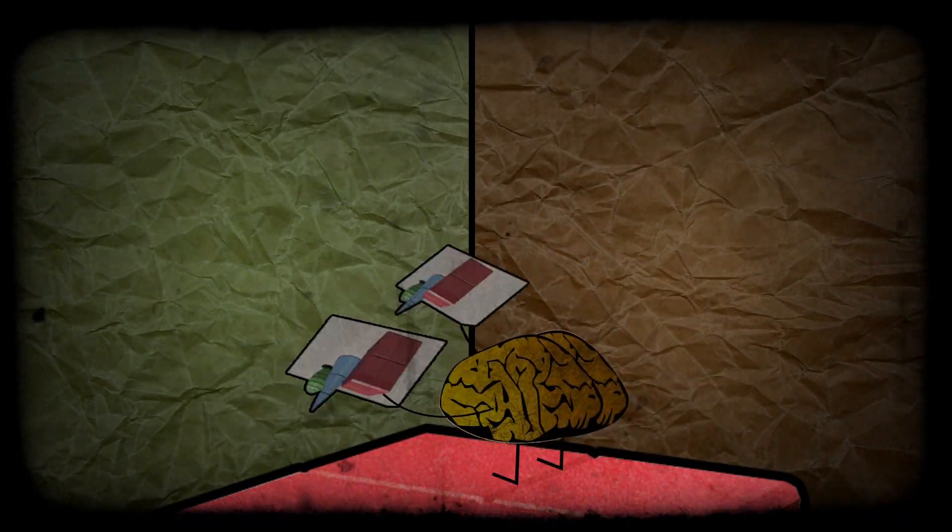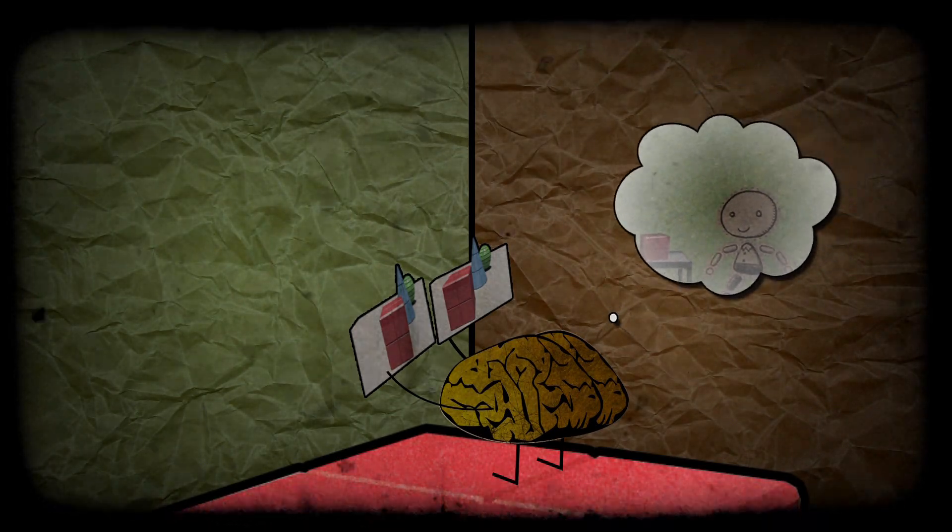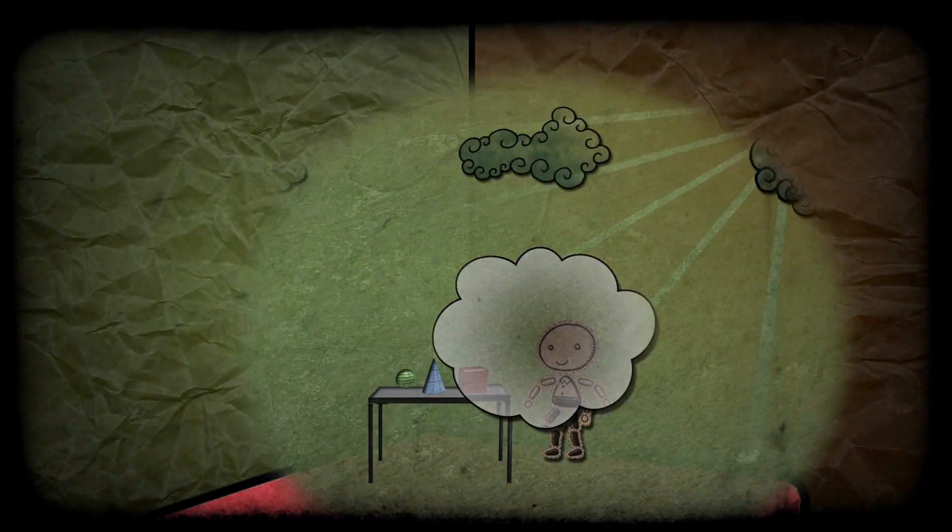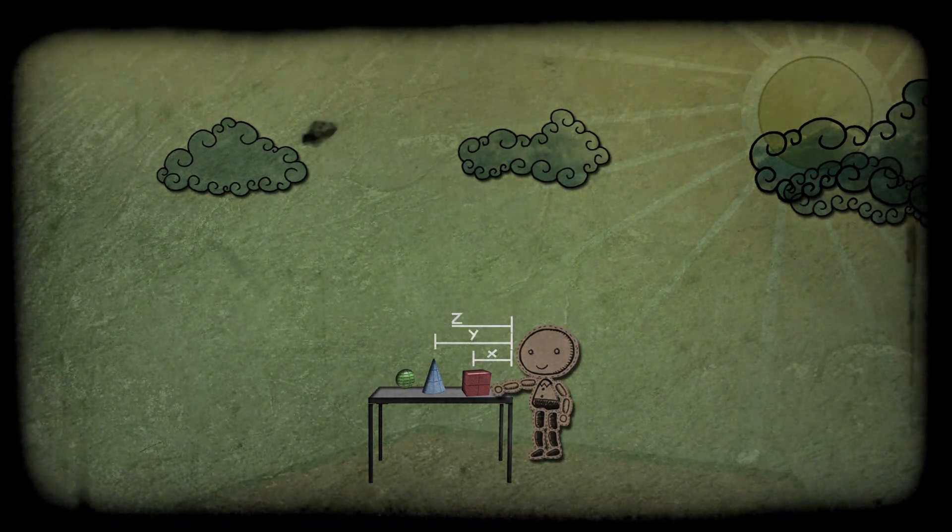This perception of depth, called 3D or stereoscopic vision, is very important in our lives. With it, we see exactly where things are placed around us, usually with considerable accuracy.